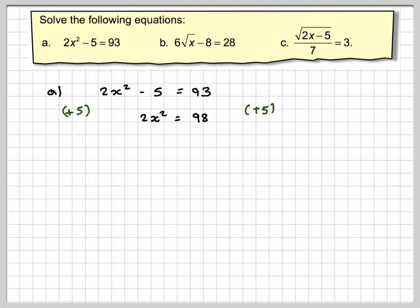We've got 2 times here. The opposite of multiplying by 2 is to divide by 2. So we end up with x squared on this side, and 98 divided by 2 is 49.